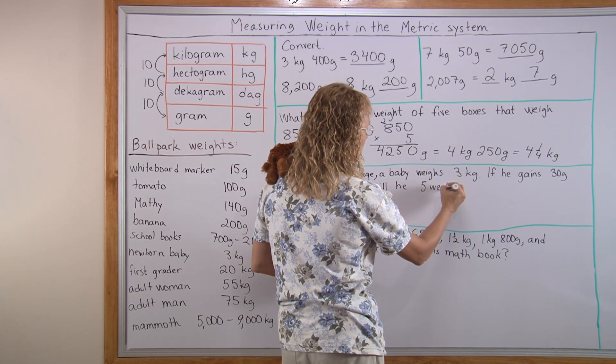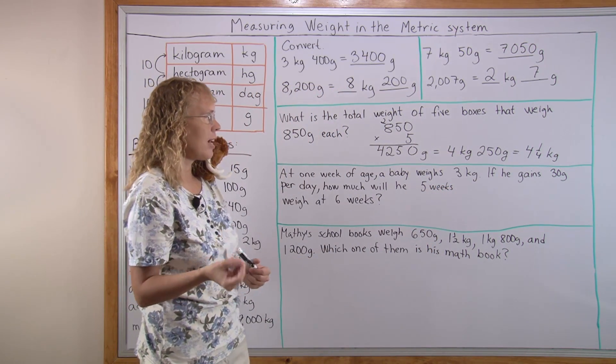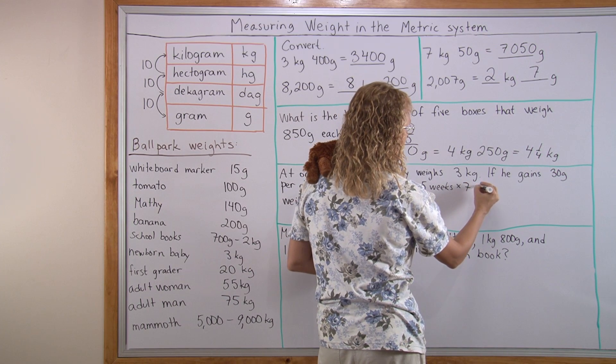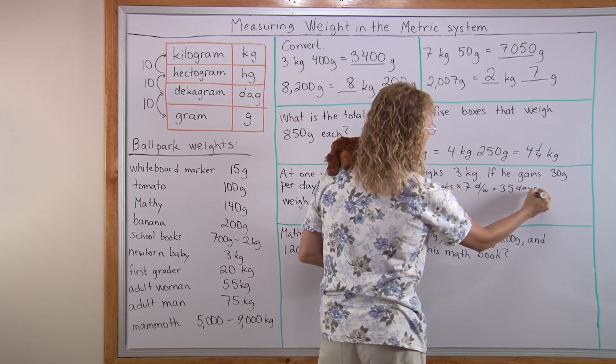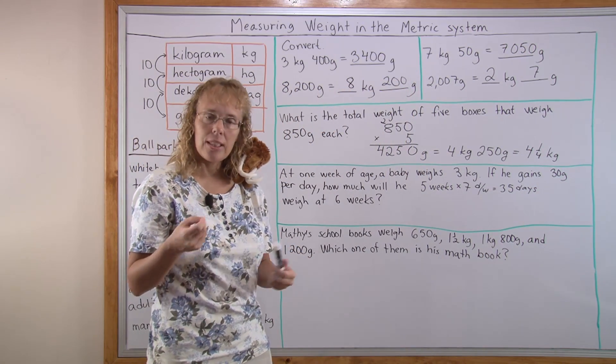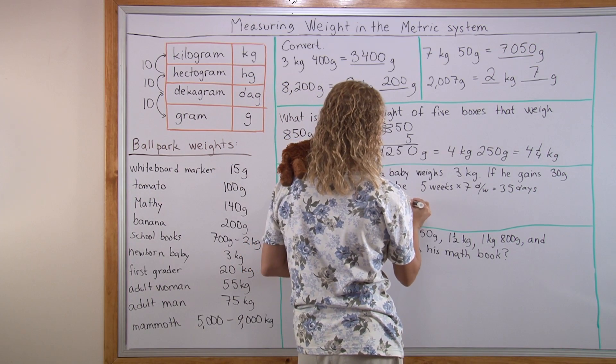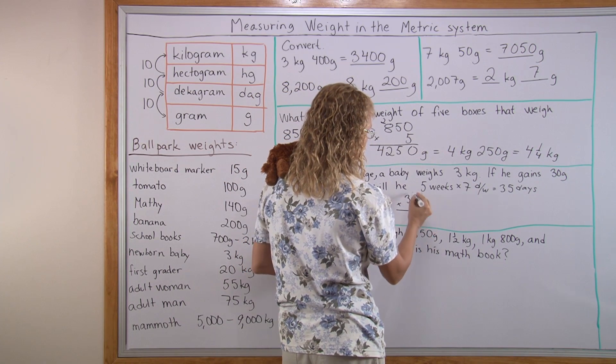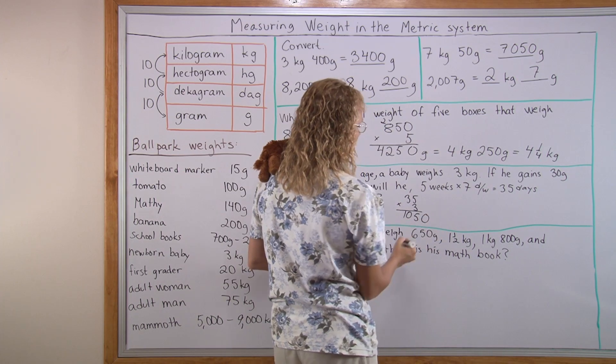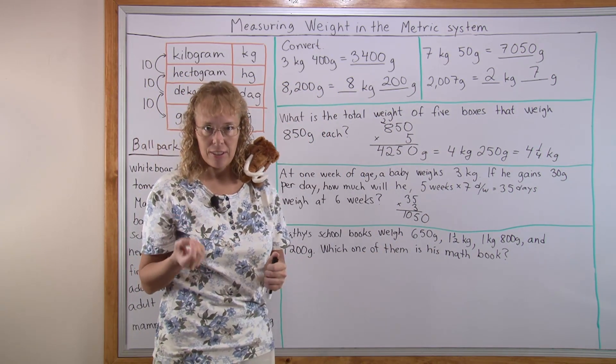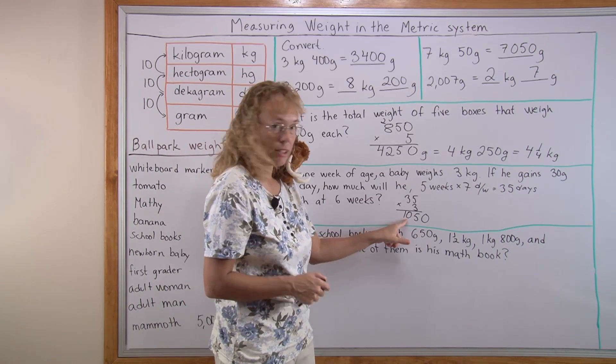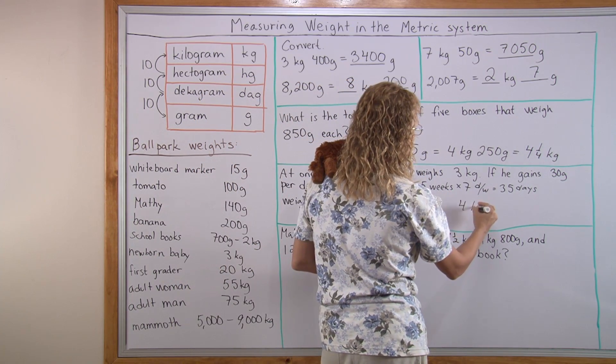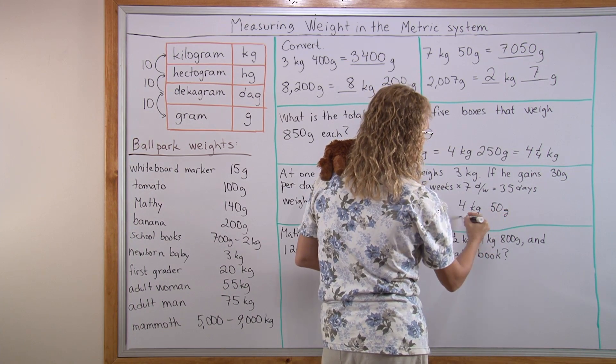We have 5 weeks to look at. And each day he gains 30 grams. So 5 weeks, how many days is that? 5 weeks times 7 days per week. So we get 35 days. And each day he gains 30 grams. 35 days times 30. I'm just going to multiply times 3 first and then tag a zero. So he gains 1050 grams, which is 1 kilogram and 50 grams. Now we add that to the 3 kilograms. We get 4 kilograms and 50 grams as our answer.